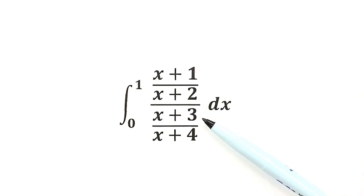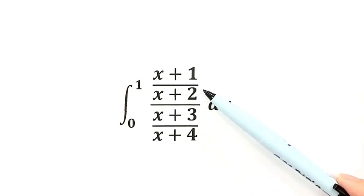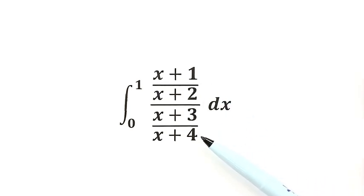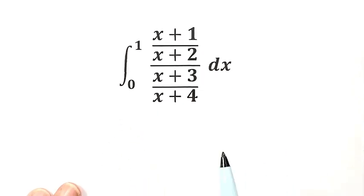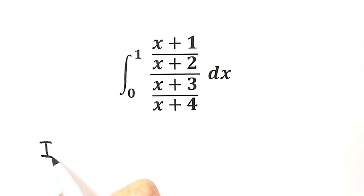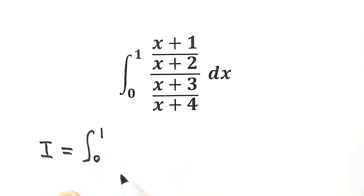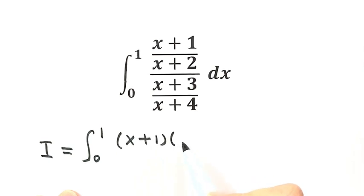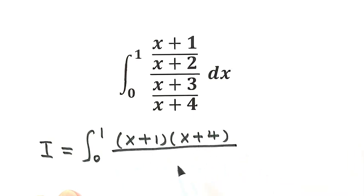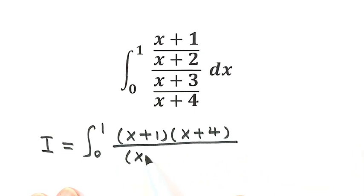We're going to simplify the inside part first, because here we have a fraction divided by a fraction. So we can write I for this integral from 0 to 1, with (x+1)(x+4) on top divided by (x+2)(x+3) on the bottom.